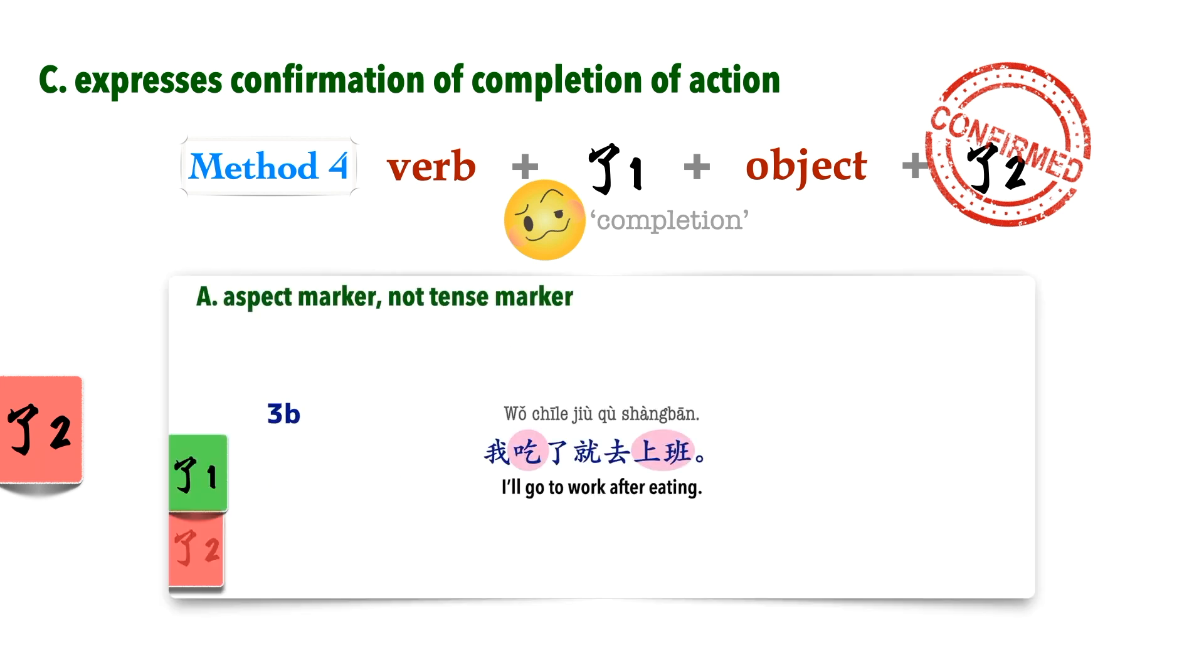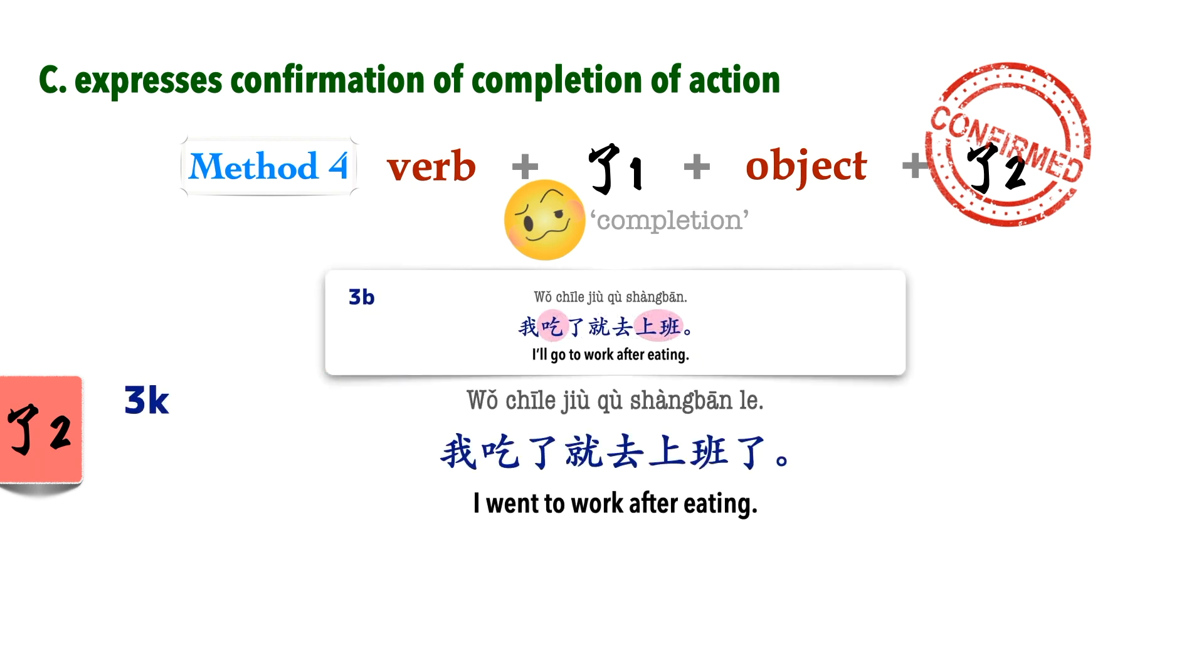Let's look at another one of our eating examples. 我吃了就去上班. If we affix 了2 at the end: 我吃了就去上班了, we have the confirmation that everything in this sentence has happened. I ate, and I went to work. 了2 confirms that this is the new situation.